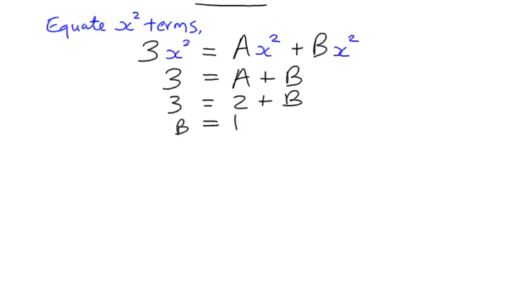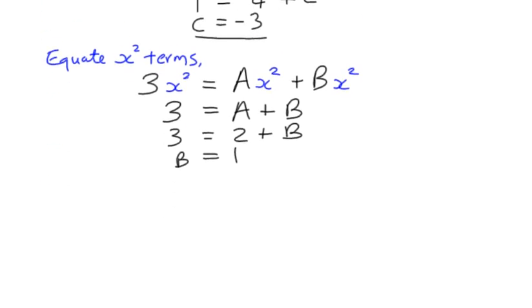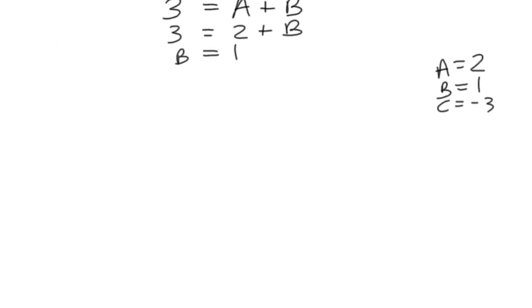So, what have we found out? We have found out that A is 2, B is 1, and C is negative 3. So, we're ready to form our partial fractions.